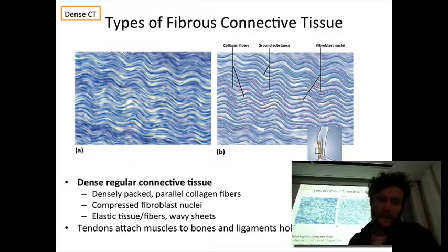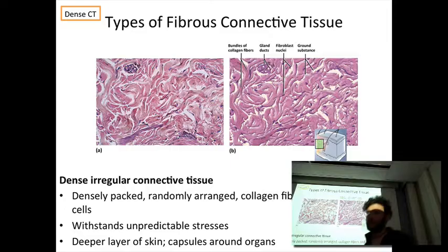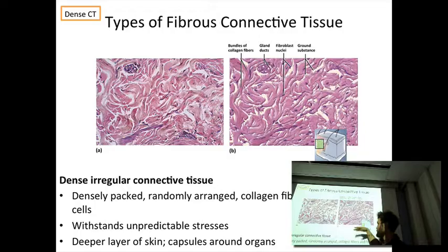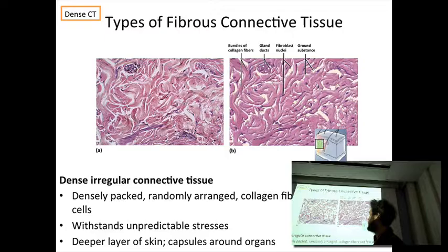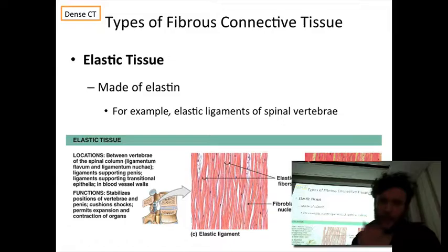Dense connective tissue — the names are very descriptive. Dense regular connective tissue is essentially a tendon: densely packed, regularly oriented, all heading in the same direction. Then there's dense irregular connective tissue — this is the dermis. Below the epidermis and the papillary layer of the dermis — which is areolar tissue — is dense irregular tissue. It has reticular fibers but they're not regularly disposed; this connective tissue is resisting stress in three dimensions, irregularly arrayed.